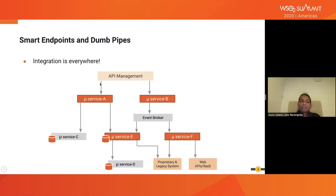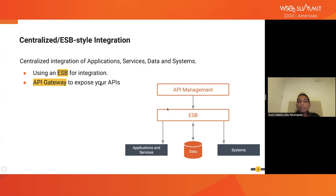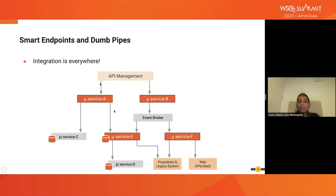In microservices architecture, what we have is a set of services interconnected to each other. There's no central layer that controls the integration. In the previous case, what we had was a centralized component — we can call it a smart pipe. But in this case, we don't have a smart pipe; rather, we have a set of smart endpoints connected through some dumb channels. These are called dumb pipes. These interconnections can happen directly over protocols like HTTP, or through event brokers, which are just dumb brokers that do the interconnection between two different services.